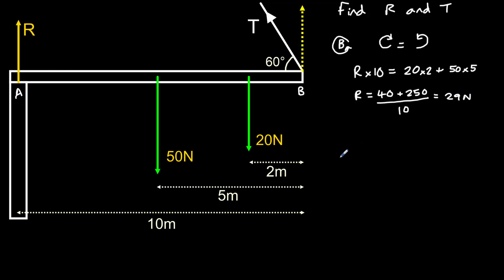Now, in order to find T, we could take moments around point A and perform a similar calculation. However, it is much quicker and easier for us to instead consider equilibrium of forces. That is to say that all the forces up must be equal to all the forces down, because the system is in equilibrium, there is zero net force.